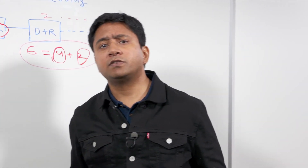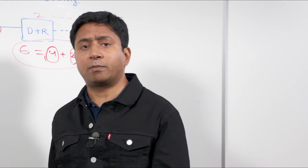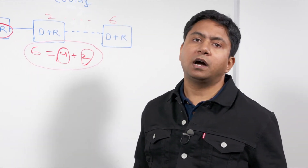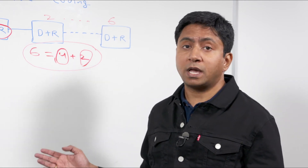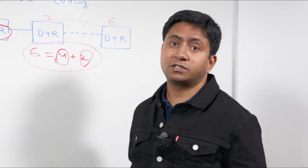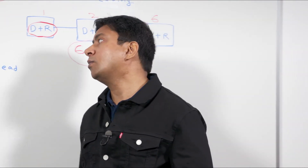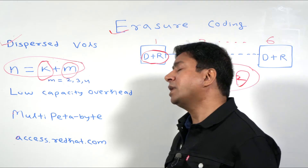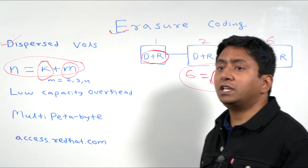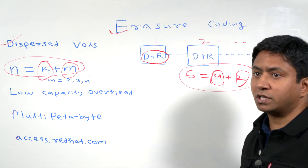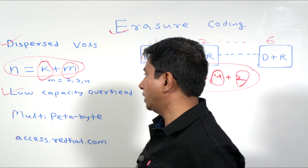One big advantage with erasure coding compared to 3-way replica is that with 3-way replica, you invest in 3x of storage capacity — there is 200% additional storage capacity overhead. If you compare it with an 8 plus 3 configuration, you have only 37% storage capacity overhead with erasure coding.